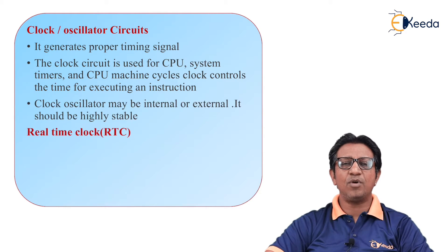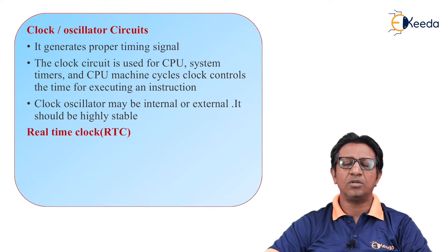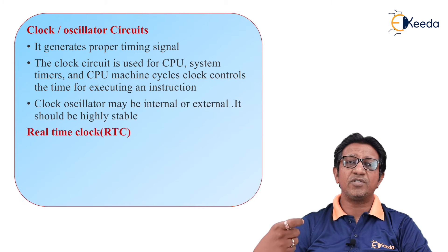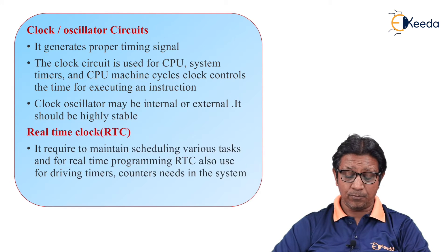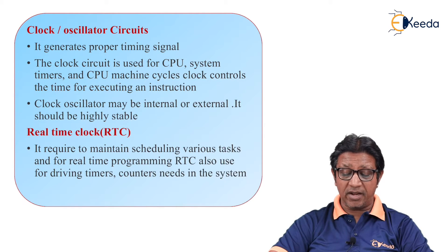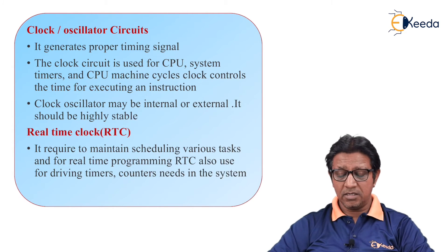The next is real-time clock. Real-time clock works with a physical timing system. For example, if a system should start at 6 a.m. and stop at 12 noon, the real-time clock will start the system at 6 a.m. and stop it exactly at 12 noon — operating with a real-world timing system. Real-time clock is required to maintain scheduling of various tasks for real-time programming, and is also used for driving timers, counters, and other needs in the system.